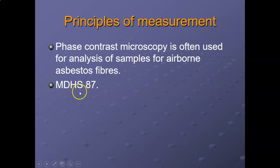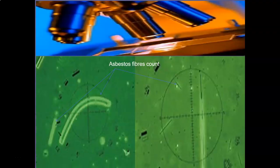MDHS — Methods for the Determination of Hazardous Substances — is not the same as MSDS. It refers to a range of guidance documents published by the HSE, essentially lab instructions or procedures for testing different gases, dust, and chemicals. For example, MDHS 87 is the procedure for counting asbestos fibers using phase contrast microscopy.